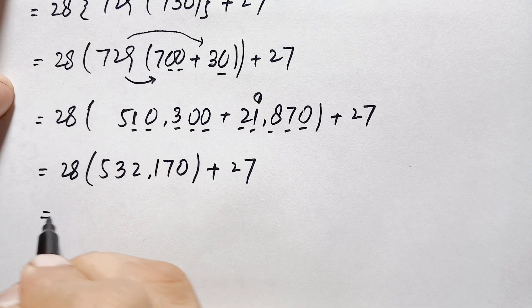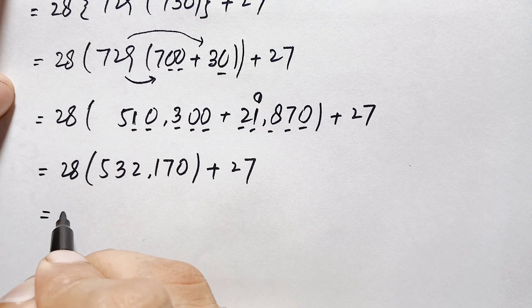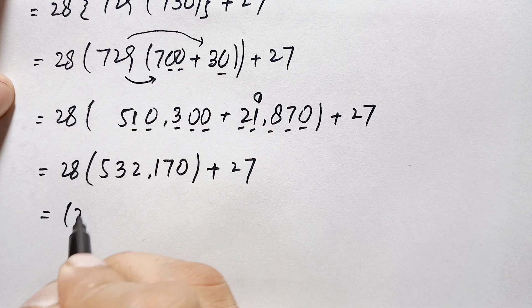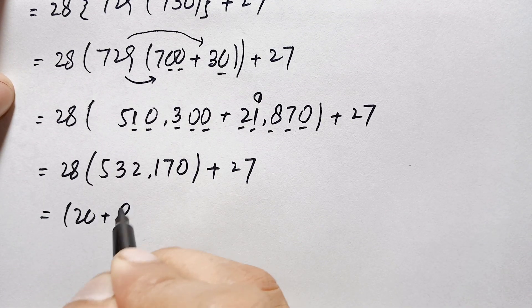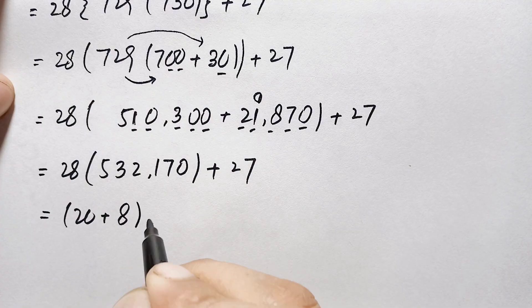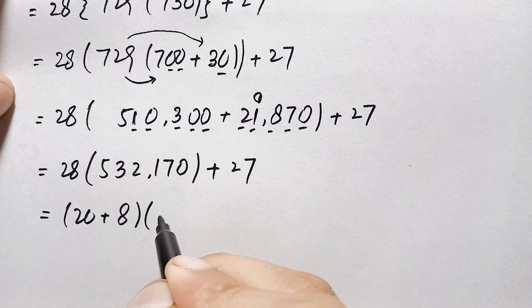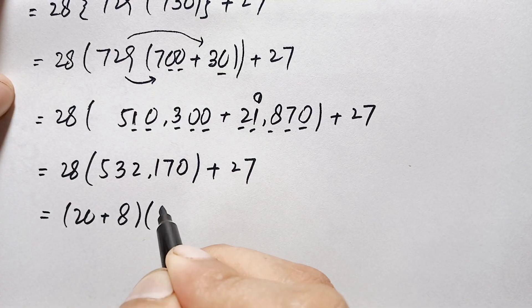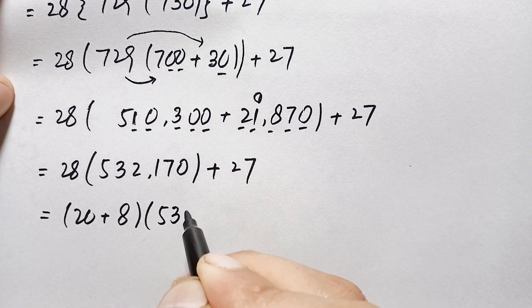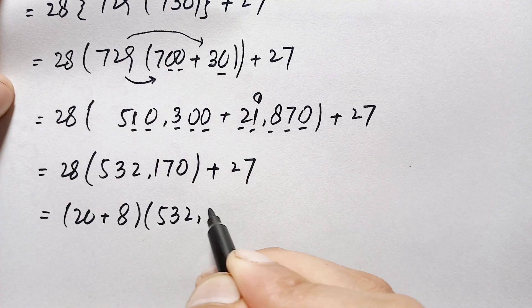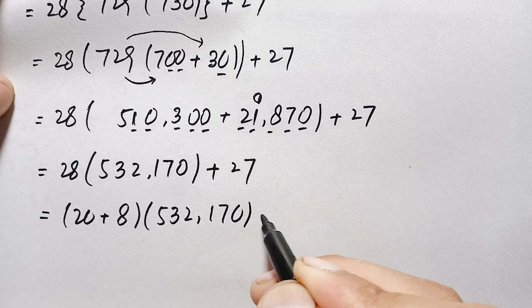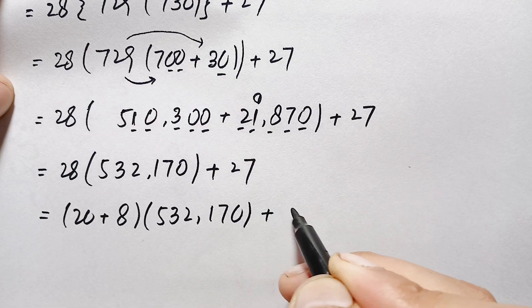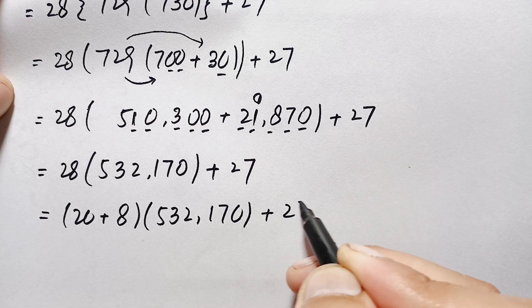So we now have 28 times 532,170 plus 27. To multiply 28 times 532,170 without a calculator, we break 28 into 20 plus 8.